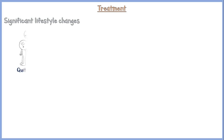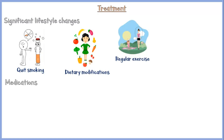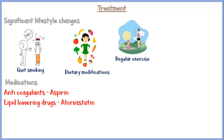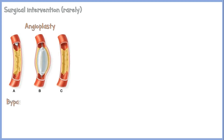Treatment of peripheral vascular disease includes significant lifestyle changes like quitting smoking, dietary modifications, and regular exercises. Some people are given medications to reduce risk factors, including anticoagulants like aspirin to reduce thrombosis, lipid-lowering drugs like atorvastatin to control hypercholesterolemia, anti-diabetics, and anti-hypertensive drugs. Rarely, surgical intervention is required, including angioplasty and bypass surgeries.